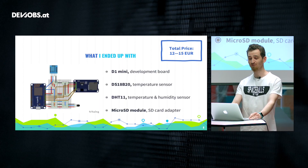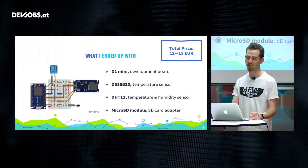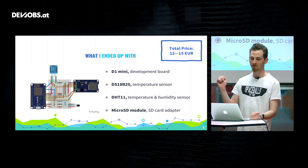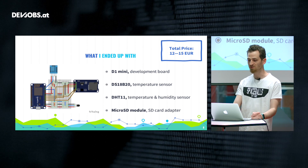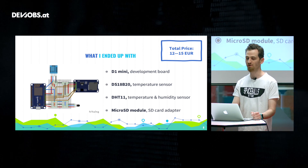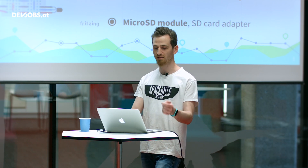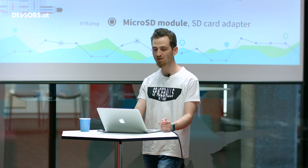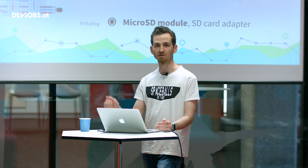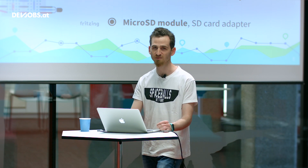What I ended up with was the D1 Mini and two different temperature sensors: the DS18B20, which is quite cool because it's attached to a cable so you can place it further away from the base station, and the DHT11, which also provides humidity values alongside temperature. I also added a micro SD module so that whenever the board loses Wi-Fi connection, the fetched temperature data is stored to the SD card as redundant memory. The total price is about 12 to 15 euros, and if you buy multiple pieces it comes down significantly.